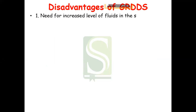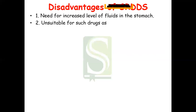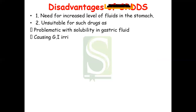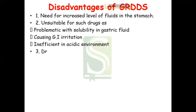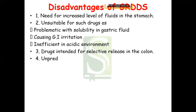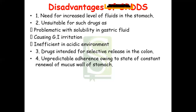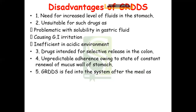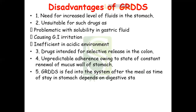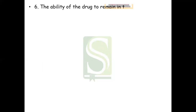The gastroretentive system has some disadvantages. First, there is a need for an increased level of fluids in the system for a buoyant system to work. It is unsuitable for drugs with problematic solubility in GI fluid, drugs that cause GI irritation, or drugs that are inefficient in acidic environments. Drugs intended for selective release in the colon cannot be effectively given as gastroretentive forms. There is also unpredictable adherence due to the constant renewal of the mucus wall of the stomach, and the gastroretentive dosage form must be administered after a meal since stomach residence time depends on digestive state.